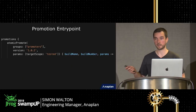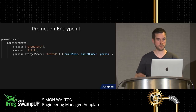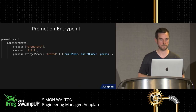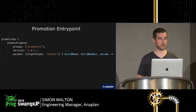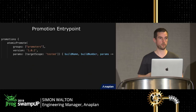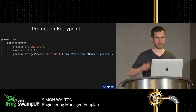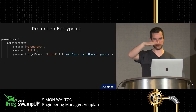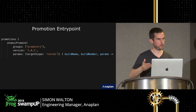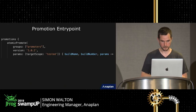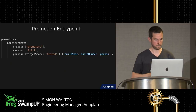The first parameter tells Artifactory which groups from the permission system are allowed to execute this plugin — anything else and you'll get a permission denied. We can also version the plugins, which is really nice for diagnosing issues across multiple Artifactory instances — you can know which version is running. We also have params: mandatory parameters the user must pass in. In our case they must pass a `targetScope` parameter, which defaults to 'tested' — the second level in our promotion chain. Then we open a closure, which is the thing that gets executed when the user calls the promotion.